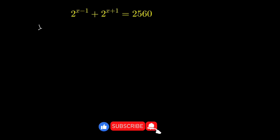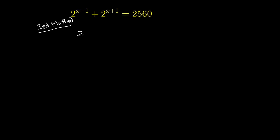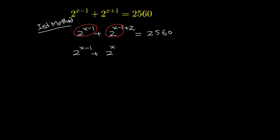In the first method, I write this equation as 2 raised to the power x minus 1, plus 2 raised to the power x minus 1 times 2 raised to the power 2. The reason I am doing this is because I would like to take 2 raised to the power x minus 1 common from the left hand side of this equation.